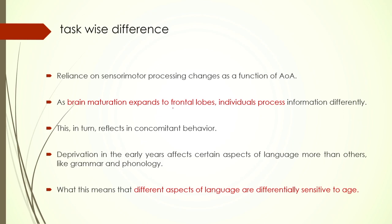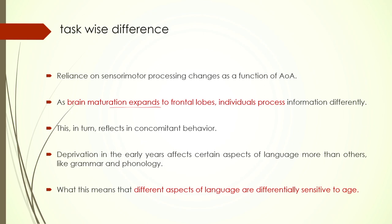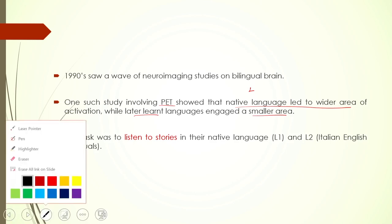Brain maturation expands to the frontal lobe, and the strategies we use to process also change. As a result, different aspects of language are also processed differently in terms of age. From the 1990s onward there are many studies using PET or fMRI and various neuroimaging techniques that have looked at the bilingual brain. One study found that native language led to a wider area of activation whereas the later-learned language engaged a smaller area — there are differences in terms of L1 versus L2.